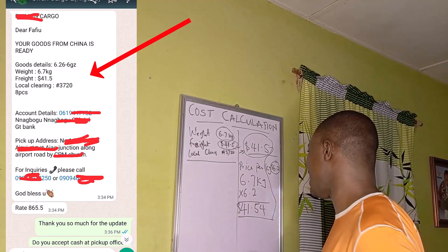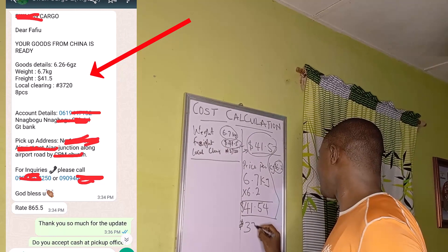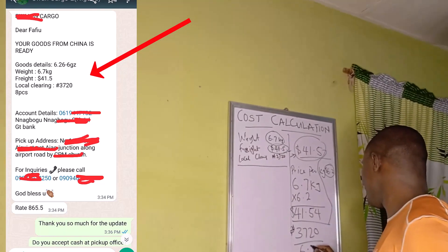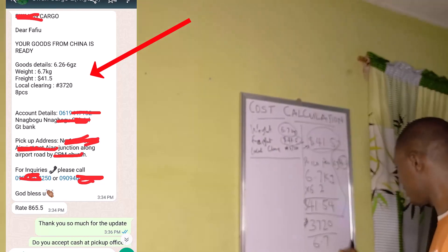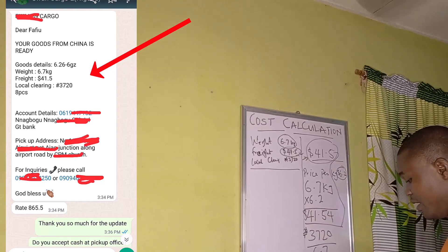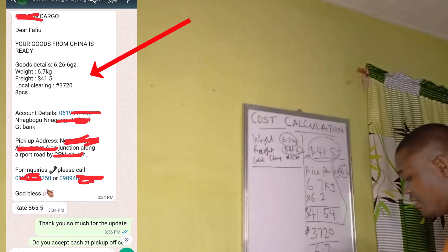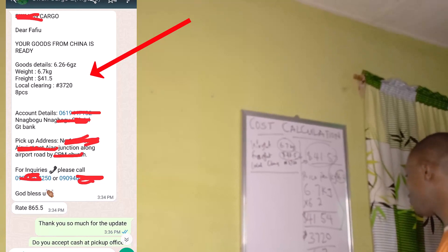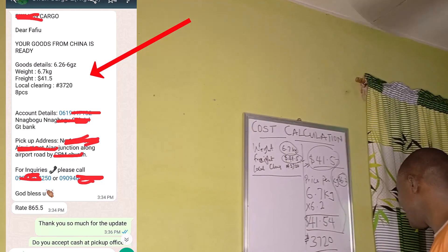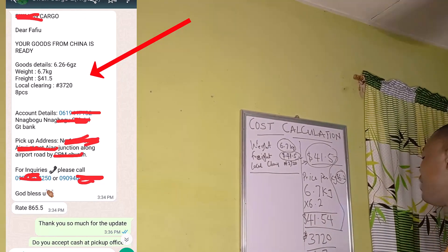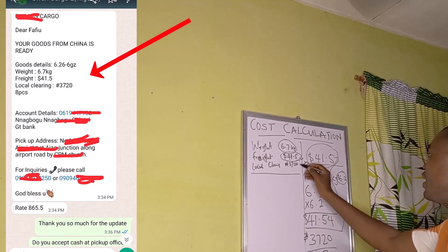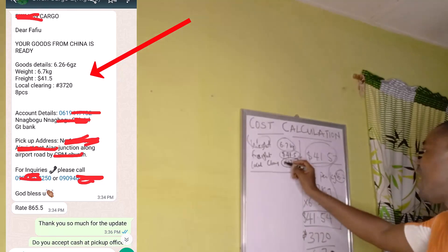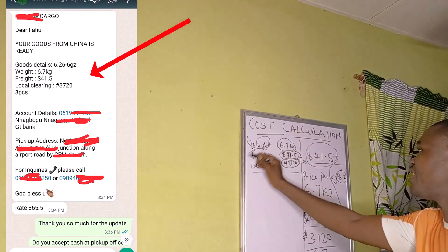For the clearing cost, the formula is simple: 3,720 naira divided by the total kg of 6.7 equals 555 naira per kg. That is how the shipping company arrives at the local clearing cost of 3,720 naira.